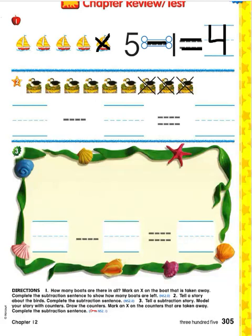One, two, three, four, five, six, seven, eight, nine. There were nine in the total group. Please write a nine on the handwriting line.